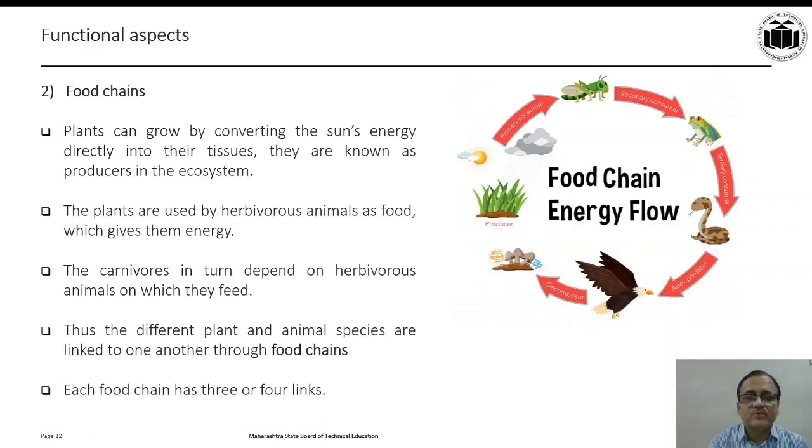Each food chain has three or four links. In the diagram, you may study one of the food chains. The plants are eaten by grasshopper. Grasshopper is eaten up by frog. Frog is consumed by snake. Snake becomes the prey for the vultures. And after death, the dead body of the vultures are consumed by the microorganisms which then provide the essential nutrients for the growth of the plants.